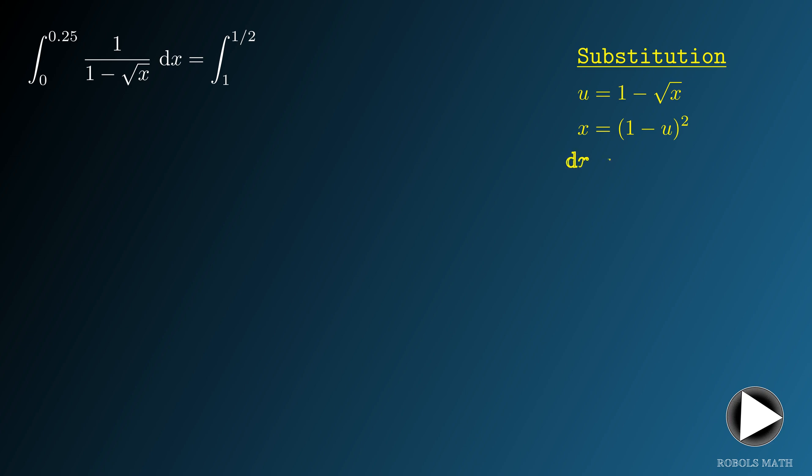In this case, dx must be negative 2 times 1 minus u, du. Thus, the given integral is actually equivalent to the integral of negative 2 times 1 minus u, all over u, du, and evaluated from 1 to 1 half.